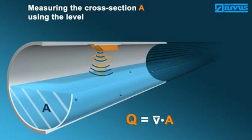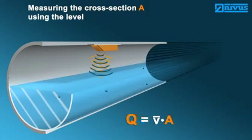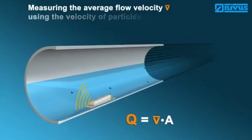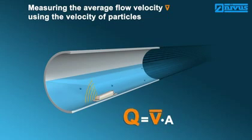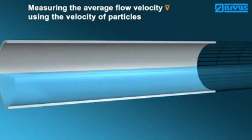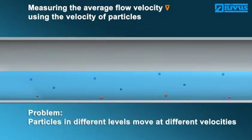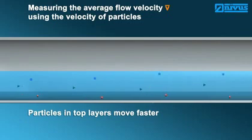The flow velocity is detected by measuring the particle velocity. Most media, particularly wastewater, contain dirt particles or gas bubbles moving with the same velocity as the medium. The velocity of the particles is measured using ultrasound. As soon as the velocity changes, the flow normally changes as well. The main difficulty while detecting the average flow velocity is that there are varying velocities prevailing at varying levels. The medium and hence the particles normally flow slower at low levels than at higher levels.